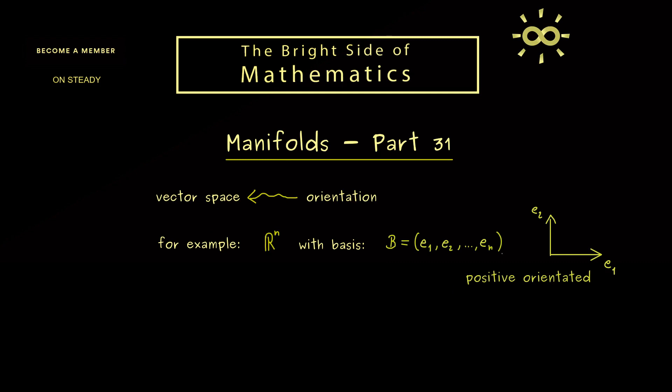And now, one simply says, by definition, this is a positively orientated basis. Hence ℝⁿ, together with this basis, has an orientation and we say it's the positive orientation.